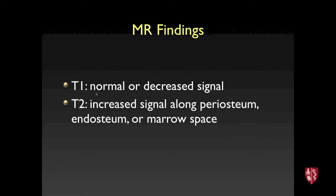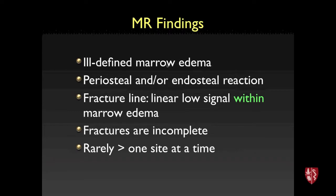On MRI, abnormal areas show decreased T1 signal and increased T2 signal. Findings include ill-defined edema within the marrow space, periosteal or endosteal surface reaction, and fracture lines which tend to be linear and low signal — non-displaced. Critically, fracture lines must be within the area of marrow edema; low signal lines on T1 without surrounding edema are not stress injuries.